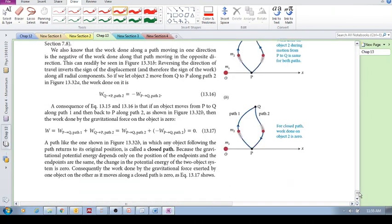And then the last one is that there's something called a closed path. Meaning that if you add up the work done from P to Q along path 1 and then the work done from Q to P, you will see that it equals 0. It's a closed path. Because the gravitational potential energy depends only on the position of the end points. And in this case, the end points are the same. So the potential energy of the two-object system is 0. And the work done by gravitational force exerted by one object on the other as it moves along a closed path is also 0.